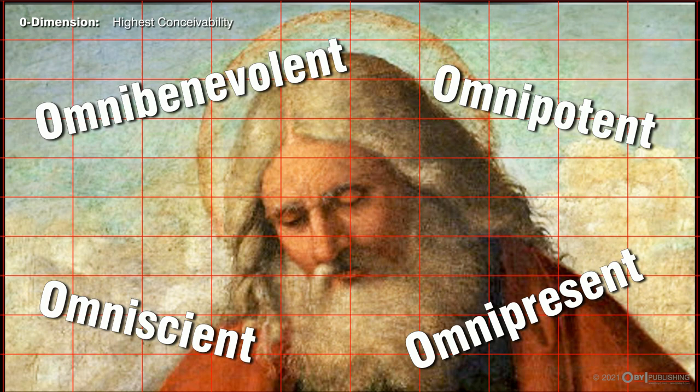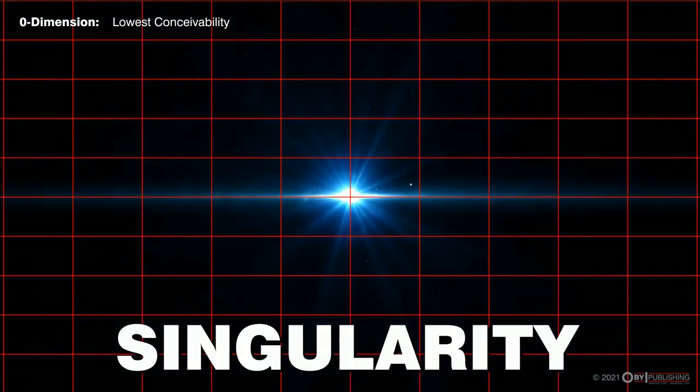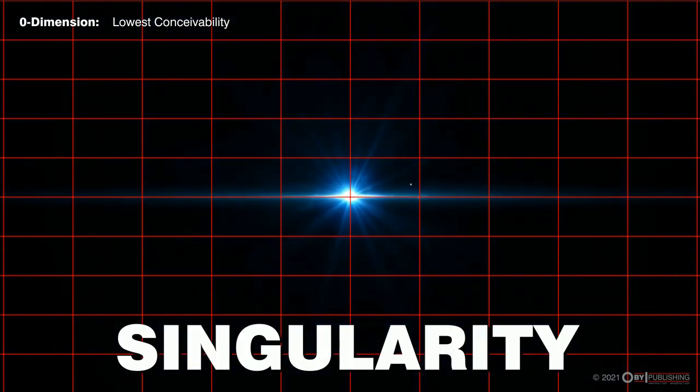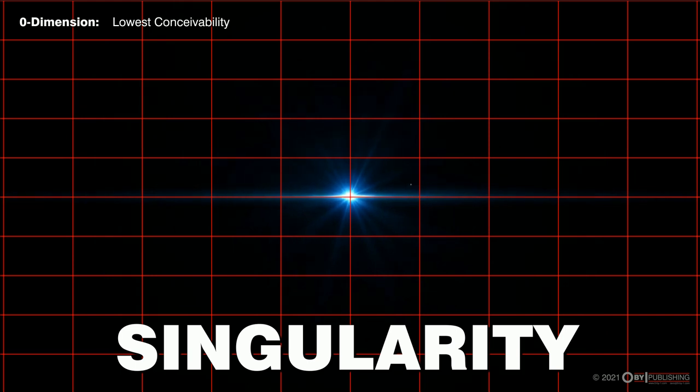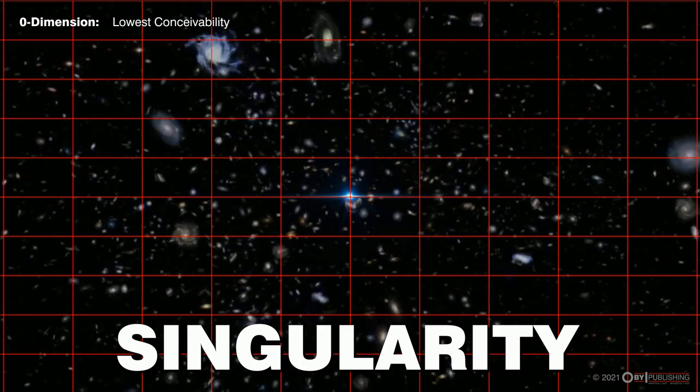This concept of God represents the highest realm of conceivability and thusly why so many humans are drawn to it. We also have everything in existence emerging from an immeasurably small point of infinite gravity and density called singularity, to which science claims represents the origin of the universe. Big Bang singularity represents the lowest conceptual limit of conceivability and thusly why so many humans are drawn to it.